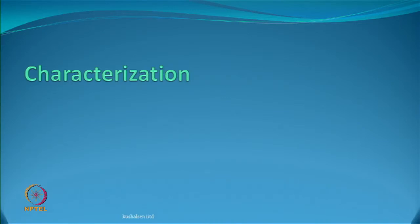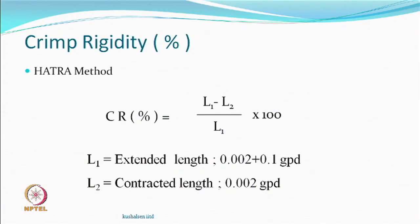Let us look at the characterization itself. We did talk about this method called the HATRA method, which measures what is called crimp rigidity. Higher is the rigidity, better is the texturing - we may at least conclude that. What it means is that the yarn recovers much more after the load. If it recovers less, then obviously it is not so good.